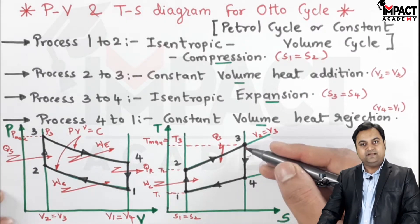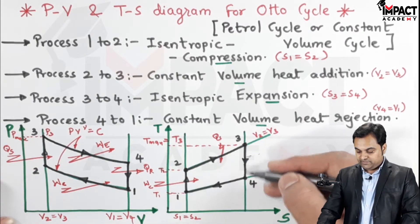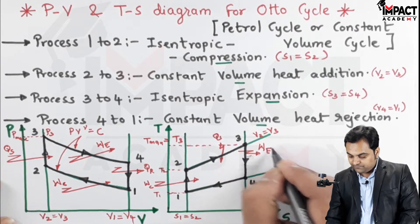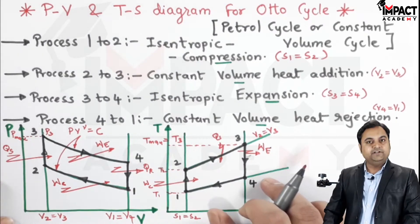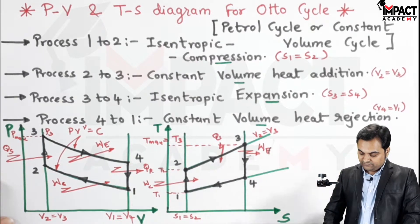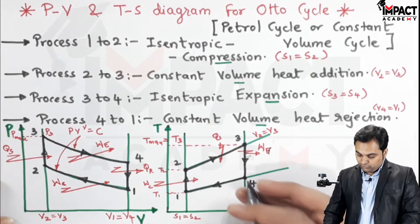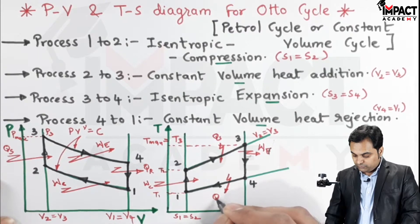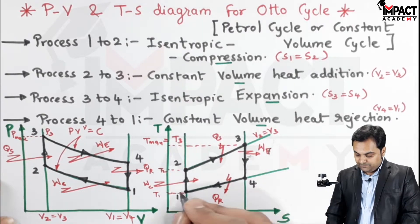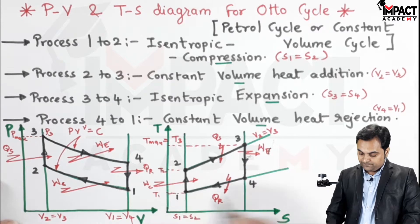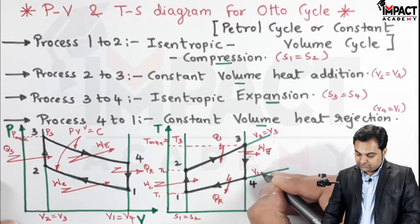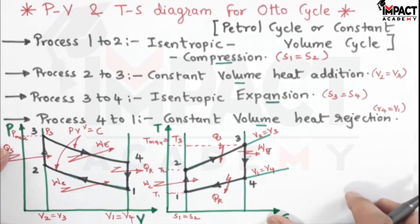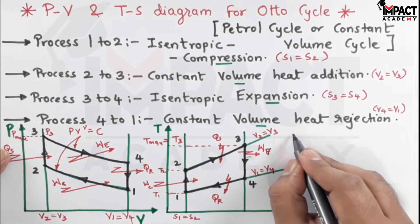After reaching maximum temperature at point 3, there is expansion from 3 to 4 where work output is obtained from the system. Then from 4 to 1 is heat rejection — heat is rejected by the system, temperature drops from point 4 to point 1, and volume remains constant so V1 equals V4. After that I'll give the efficiency formula for the Otto cycle.